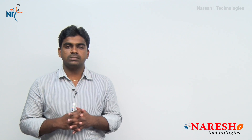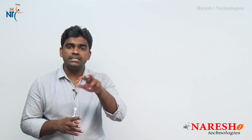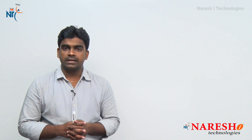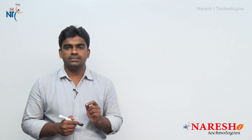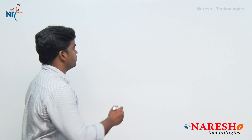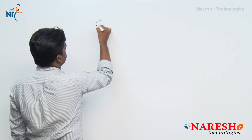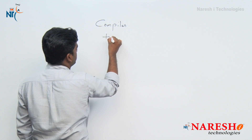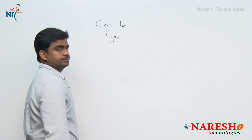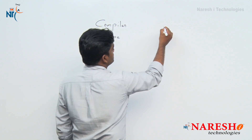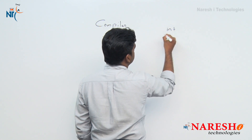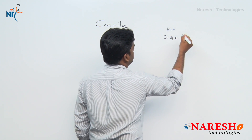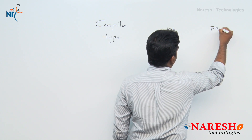We already know that integer size in C language is not constant — it changes from one compiler to another compiler. In the same way, the pointer size also will change. Let's observe a table with compiler type, size of integer, and size of pointer.